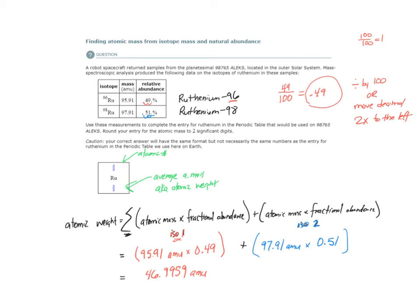97.91 times 0.51 is 49.9341. So these are intermediate values. I'm just going to continue out the four decimal places for both. So if I add those two together, 46.9959 and 49.9341, what I get is 96.9300.